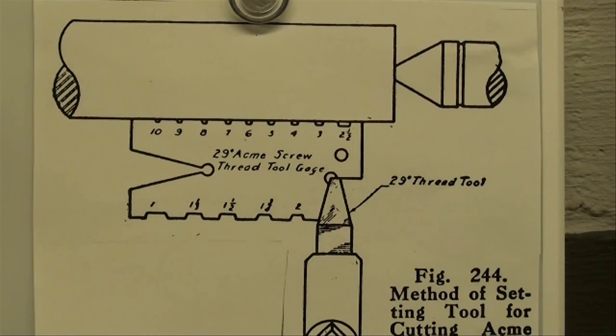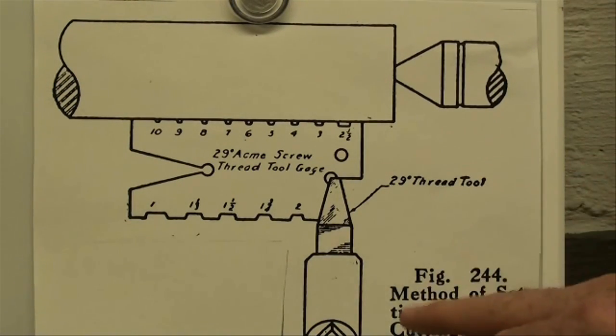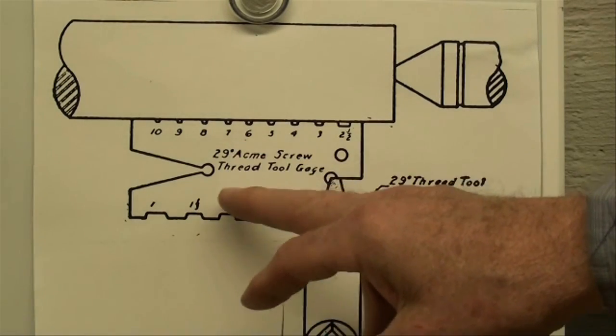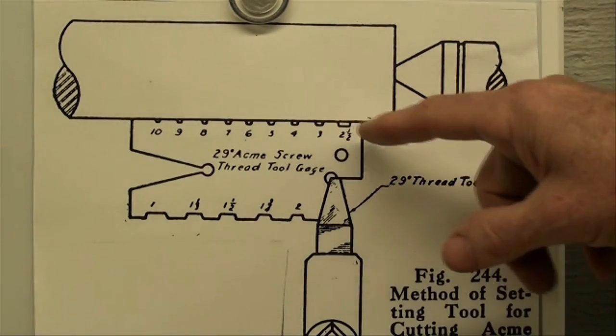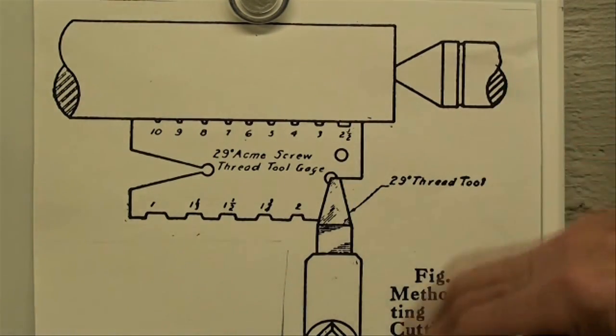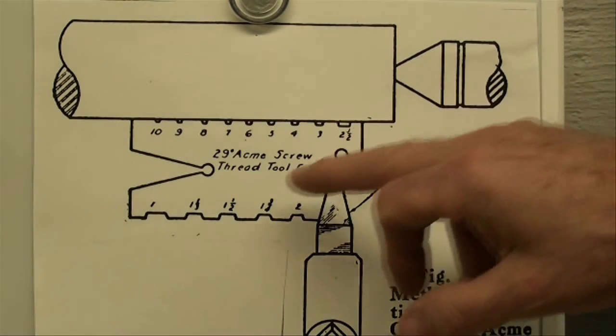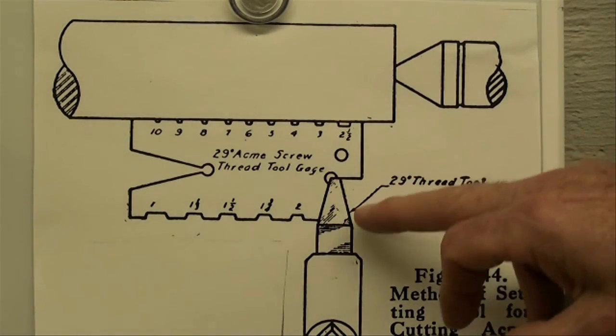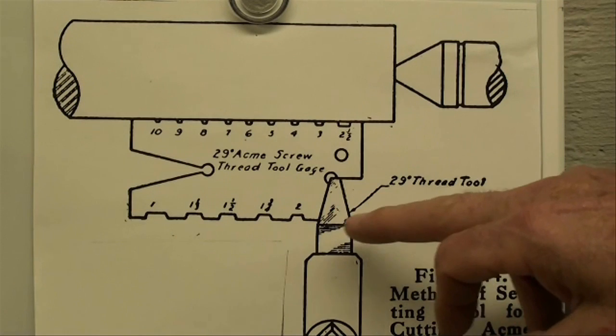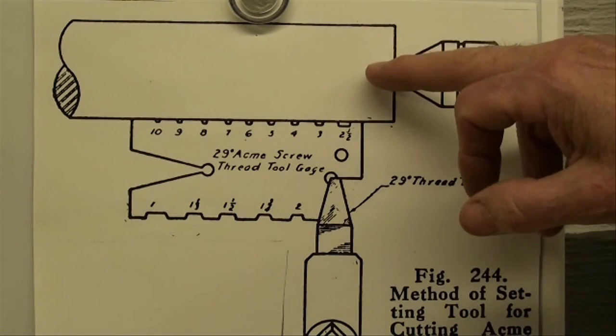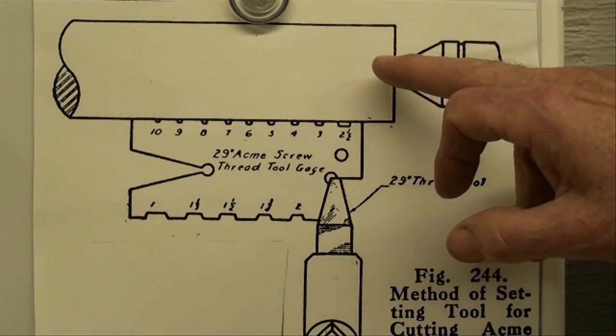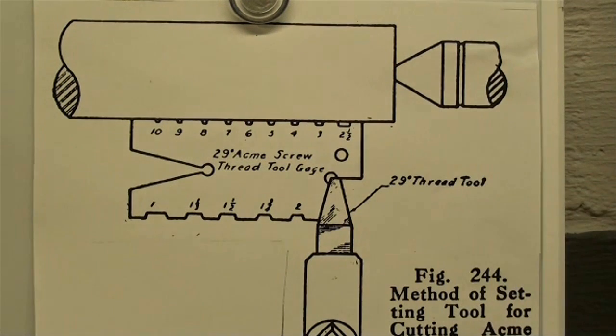This is a pictorial view of work held between centers, and this is how we set it up. Instead of using a center gauge, we're going to use that Acme gauge that I showed you, and it has several purposes. It's for grinding the tool and also for setting your tool perfectly square to the work. You have to be perpendicular, and that's how we're going to do it. If you recall, we used a center gauge when we did a regular 60-degree thread.